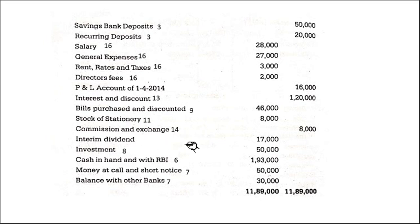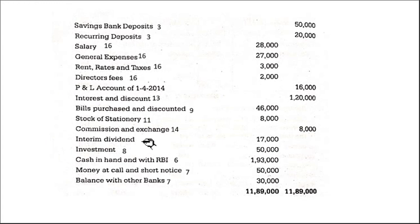Interim dividend — there is no particular schedule for this, but this is appropriation. After getting the net profit, we can pay the dividends — interim dividend goes in the appropriation section of the profit and loss account. Then investments come under Schedule 8, investments.